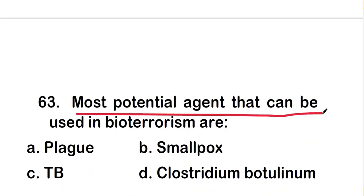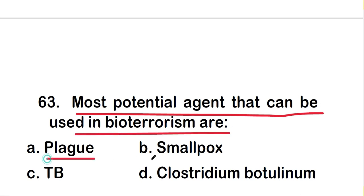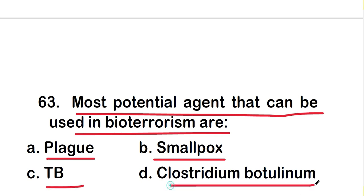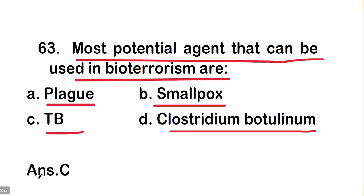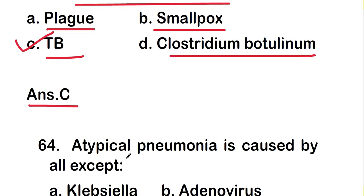The next question is: the most potential agent that can be used in bioterrorism — is it plague, smallpox, TB, or Clostridium botulinum? The right answer is option C, that is TB. TB is the most potential agent that can be used in bioterrorism.